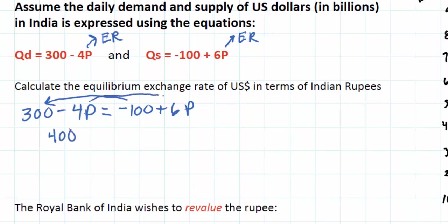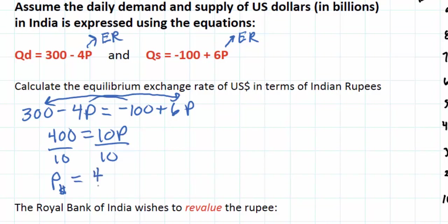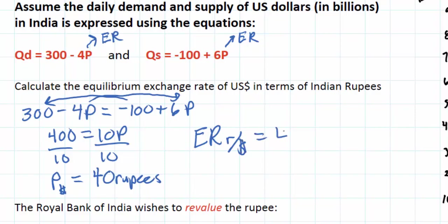Moving the 4P over gives us 400 equals 10P. Dividing both sides by 10, we see that the price of the US dollar in India is 400 divided by 10, or 40 rupees. So we can say that one US dollar in India costs 40 rupees — the exchange rate in rupees per dollar is 40.